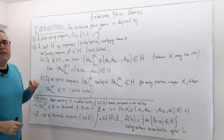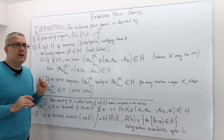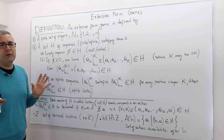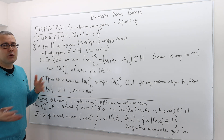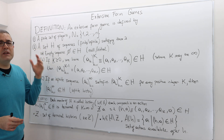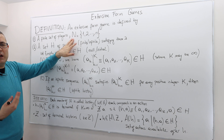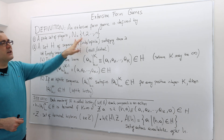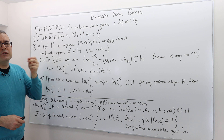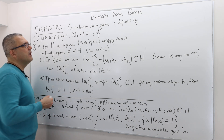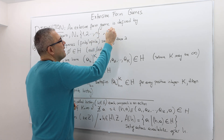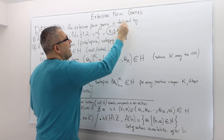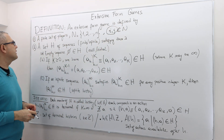First, there should be a finite set of players. We can describe extensive form games for infinitely many players, but for simplicity let's assume it is finite. We denote the set of players as capital N, and these are the players: 1, 2, 3, all the way up to N. We usually denote players by i and j — i, j element of N means these are the names of the players.